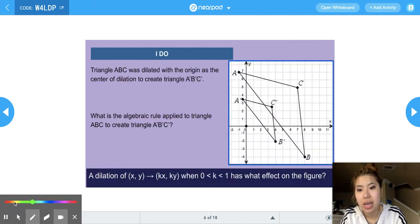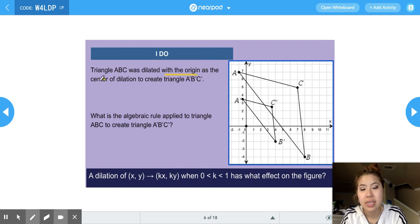For this first I do, it reads that triangle ABC was dilated with the origin as a center of dilation to create triangle A', B', C'. So we can see that the original triangle is this one right here, ABC. And that the dilated shape is smaller than that original triangle. So right away, I know that our scale factor is probably going to be less than one. Now we have to write the algebraic rule applied to the triangle ABC to create triangle A', B', C'.